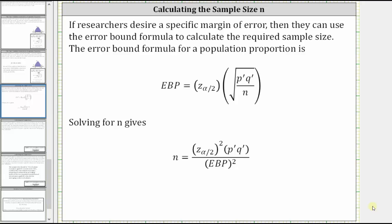This lesson will show how to calculate the sample size for a population proportion given a specific margin of error. If researchers desire a specific margin of error, then they can use the error-bound formula to calculate the required sample size.